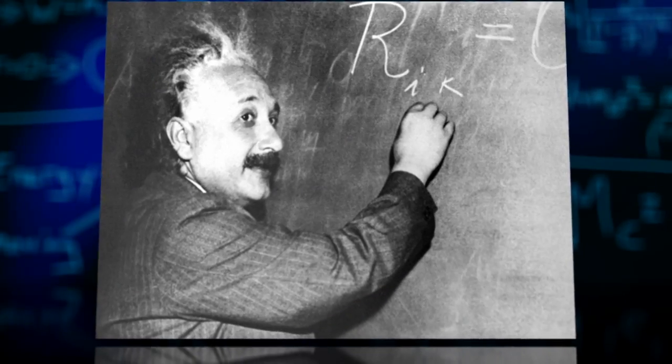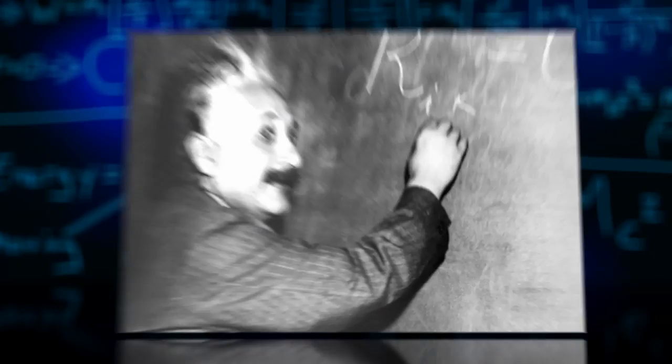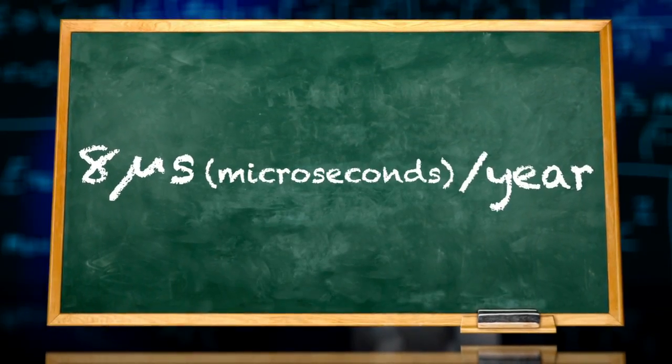Einstein's theory suggests that the time it takes the stars to orbit each other should shrink by about eight millionths of a second per year.